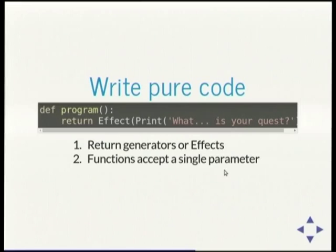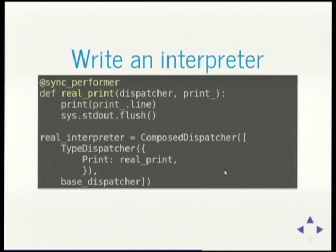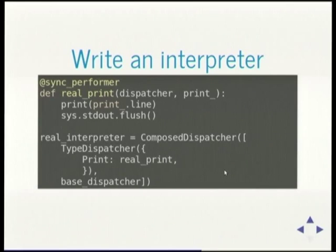You can return a generator which lets you treat this as a coroutine, or you can return an effect object. For something simple you might just return an effect, but when you want flow control and loops I find it's easiest to express that using generators and coroutines rather than returning callbacks — the boilerplate gets in the way. The function accepts a single parameter which is the intent that it's going to action. You write an interpreter — that's the bit where you encode actual real IO, where you can talk to a random number generator or consult global variables.